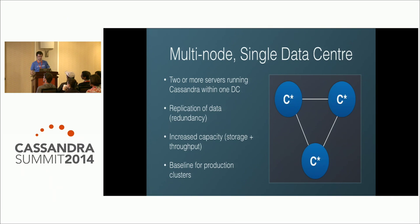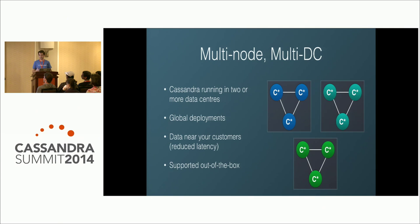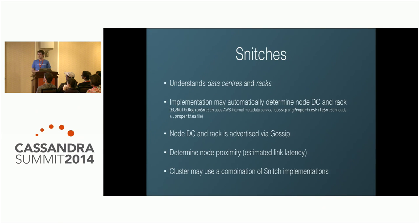The next step is multi-node, multiple DC — hard to get right but awesome when it works. It's designed for global deployments, with Cassandra clusters spread geographically around the world. It allows your app and data store to be geographically close to each other and close to your customers. This is supported out of the box in Cassandra, but only for data centers where every node has a public IP address.